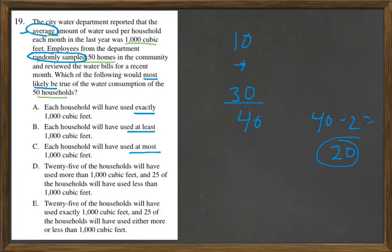And then D, 25 of the households will have used more than 1,000 cubic feet, and 25 of the households will have used less. So half have more and half have less. And so that would make sense when you consider averages.